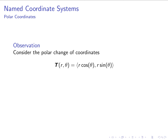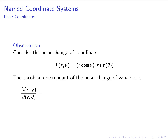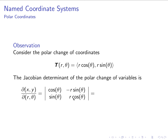Let's calculate the Jacobian determinant of the polar change of variables. We want to calculate the derivatives of x and y with respect to r and θ and take the determinant of the resulting matrix. x = r cosθ, so its derivative with respect to r is cosθ. y = r sinθ, so its derivative with respect to r is sinθ. For the second column we take derivatives with respect to θ: the derivative of r cosθ with respect to θ is −r sinθ, and the derivative of r sinθ with respect to θ is r cosθ.